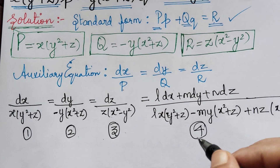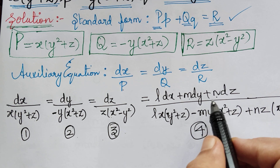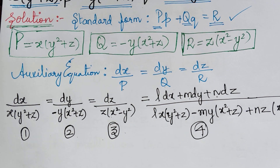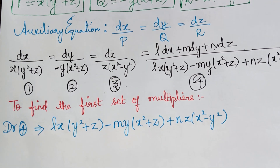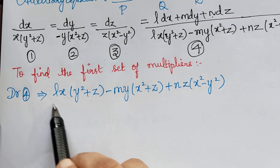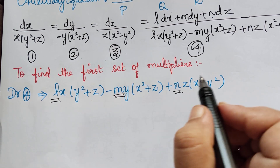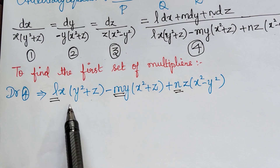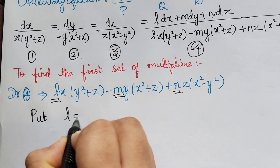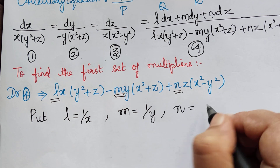We need to choose multipliers L, M, and N to make the denominator of the fourth ratio equal to zero. For the first set of multipliers, I choose L = 1/x, M = 1/y, and N = 1/z, and will verify whether the denominator becomes zero.